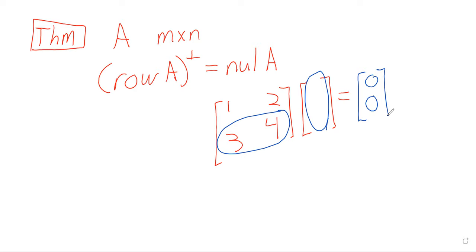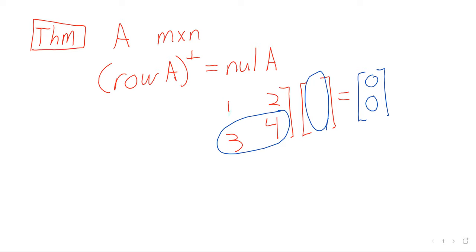So something's in the null space if and only if these two dot products are 0. That is to say, if and only if it's in the orthogonal complement of the row space. That argument used a theorem that I'm not sure I've explicitly stated.